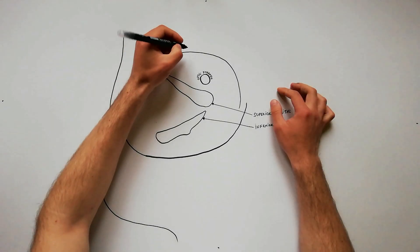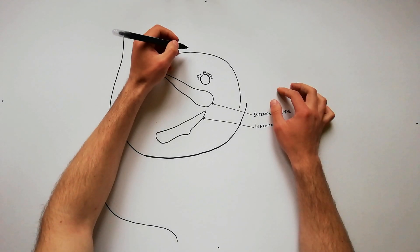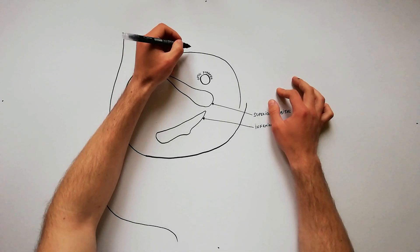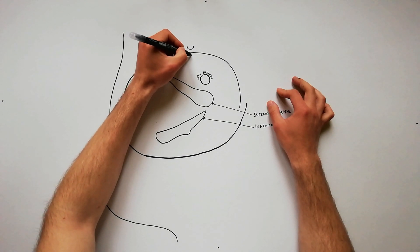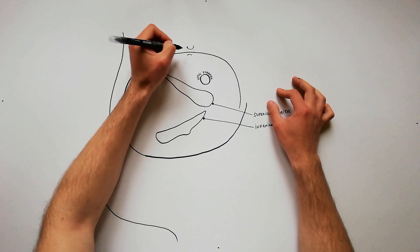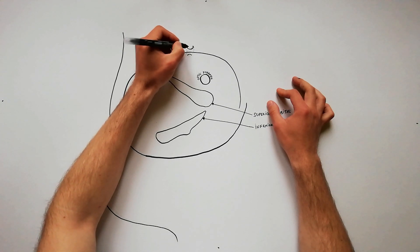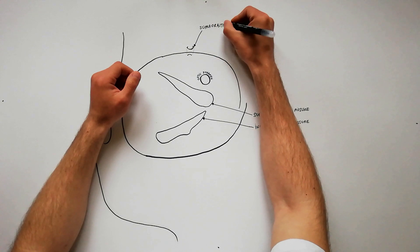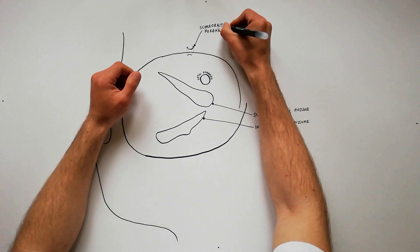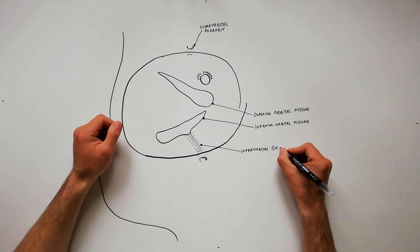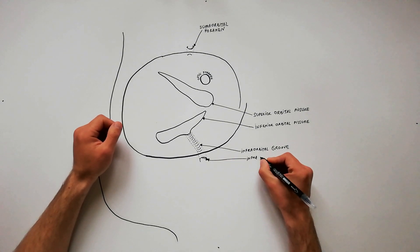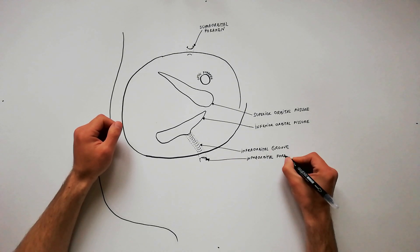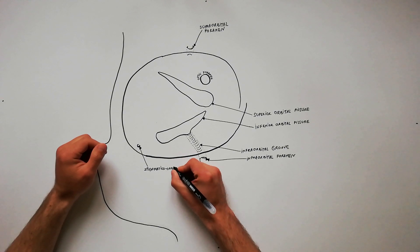We will discuss today the vascular and nervous content of the orbit. We have indicated a diagram of the orbit where we can observe the optic foramen, the superior orbital fissure, and the inferior orbital fissure. We will also emphasize the supraorbital foramen, the infraorbital groove which leads into the infraorbital foramen, and the zygomatic orbital foramina.